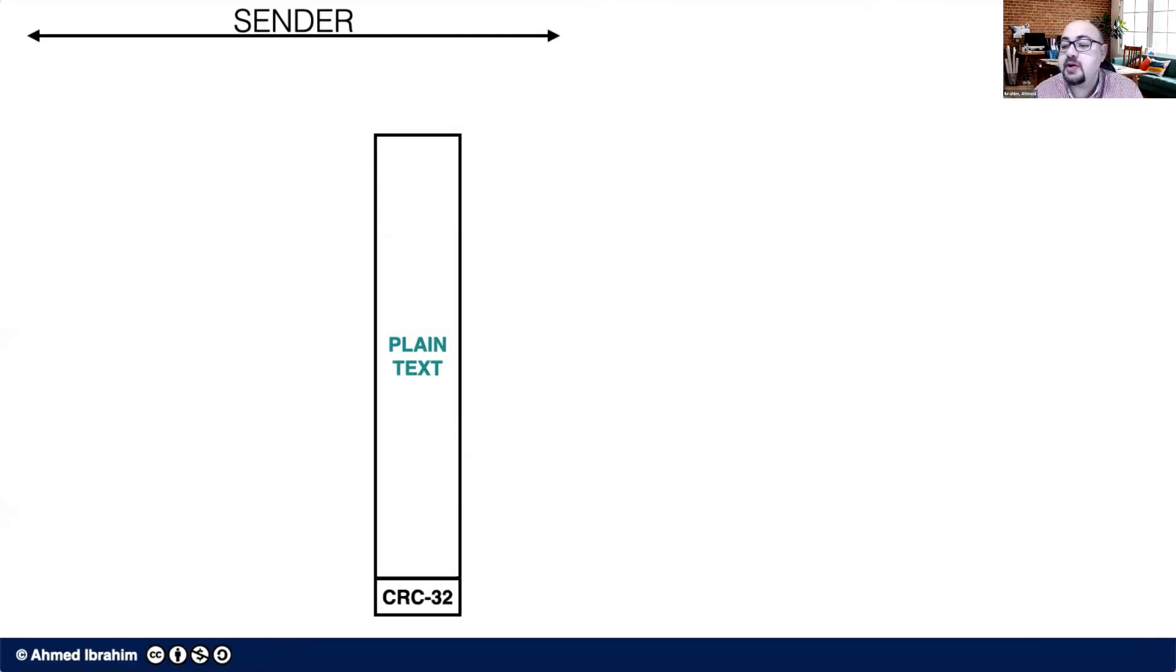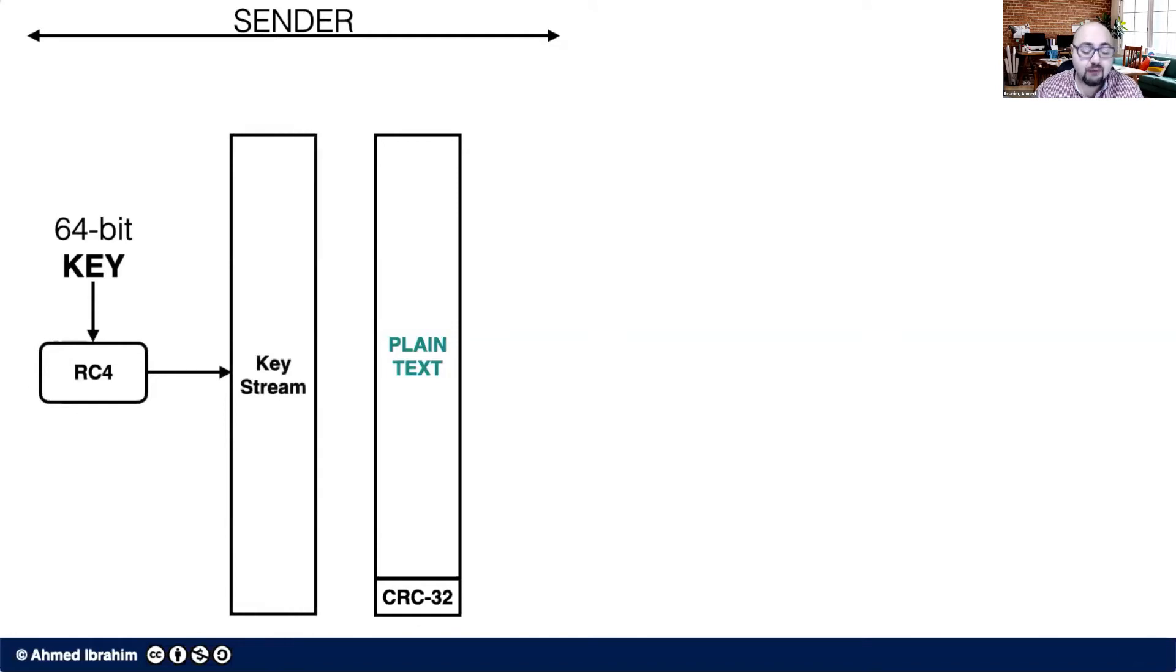we want to generate a key that will be used for encryption. So in general, we would think that we will have a 64-bit key that will be a seed for RC4 to generate the RC4 key stream and XOR that with the plain text.